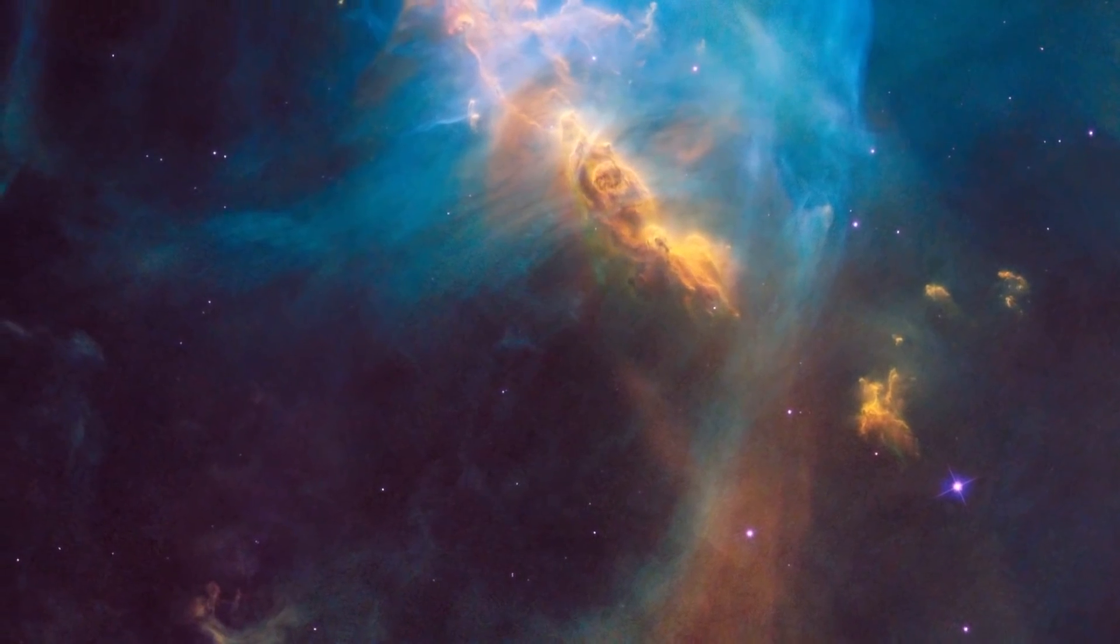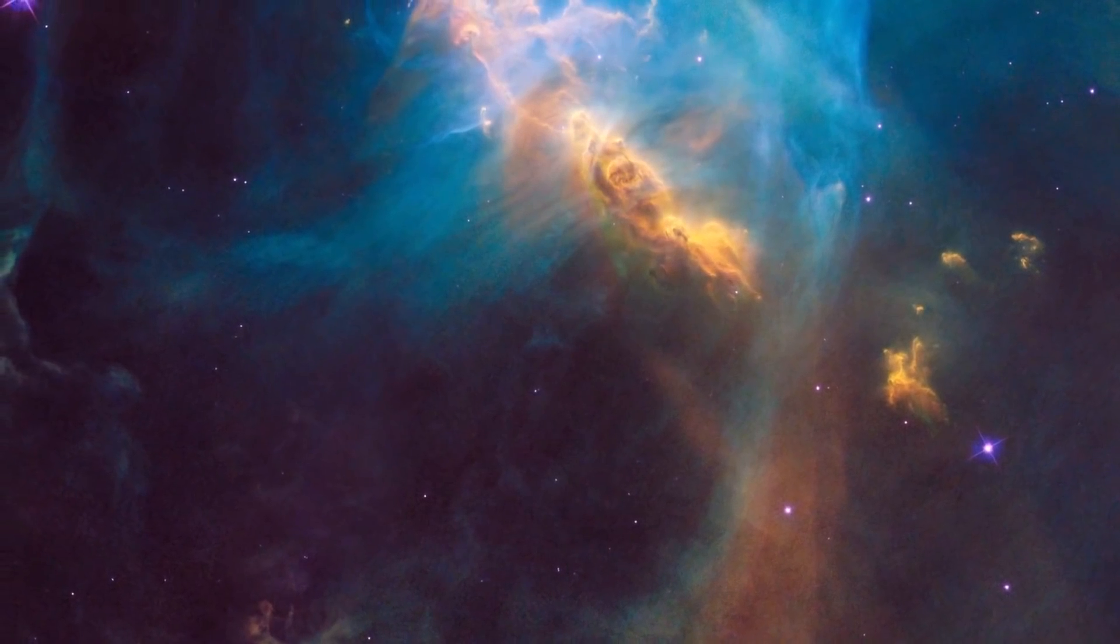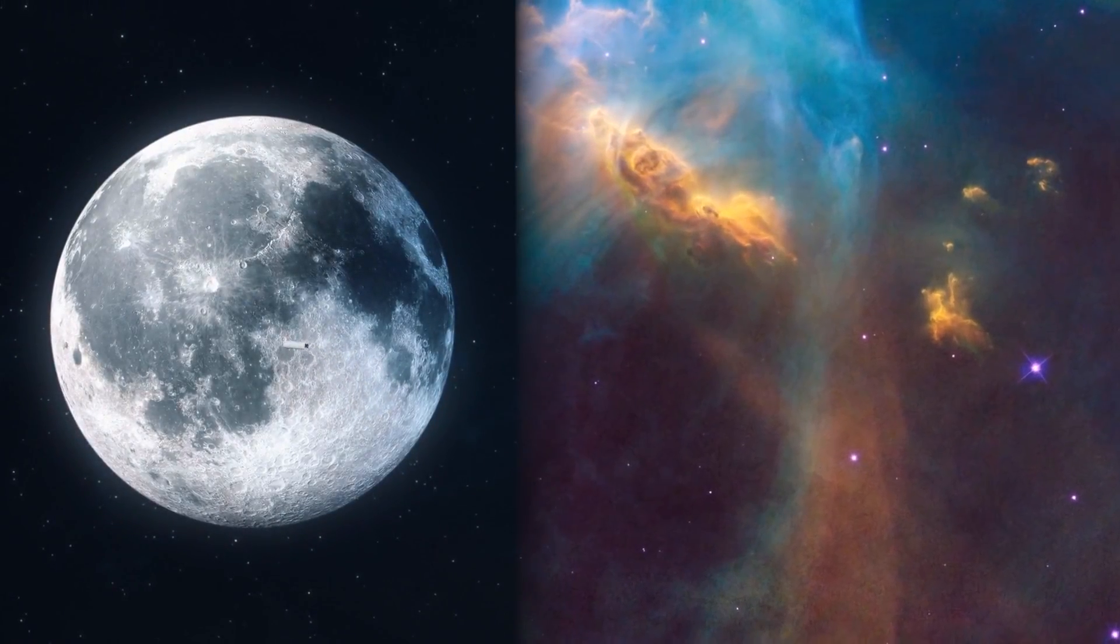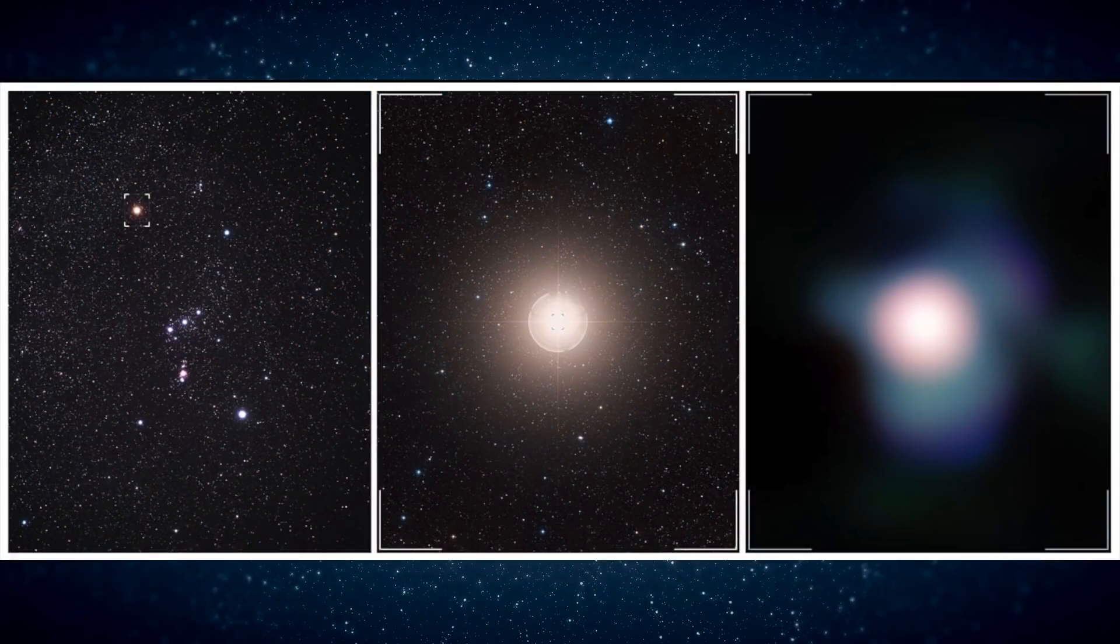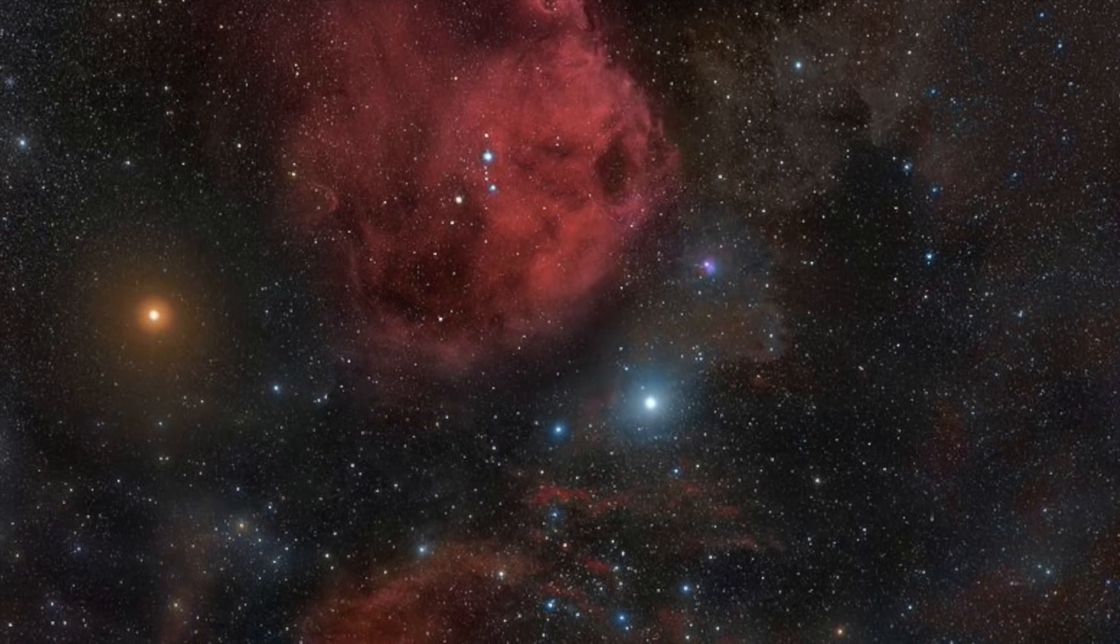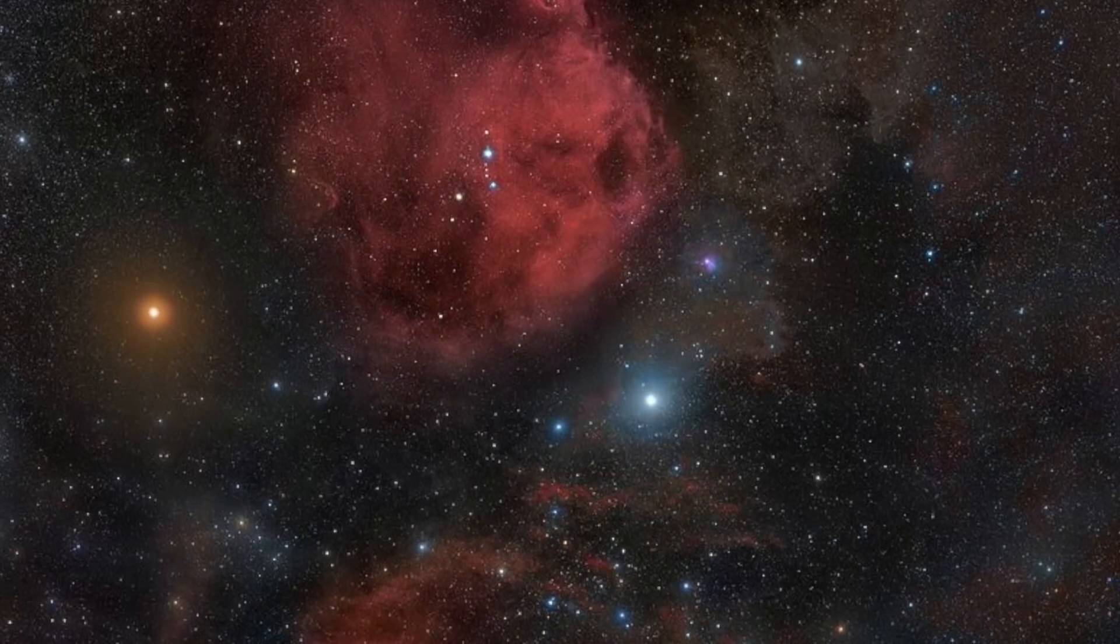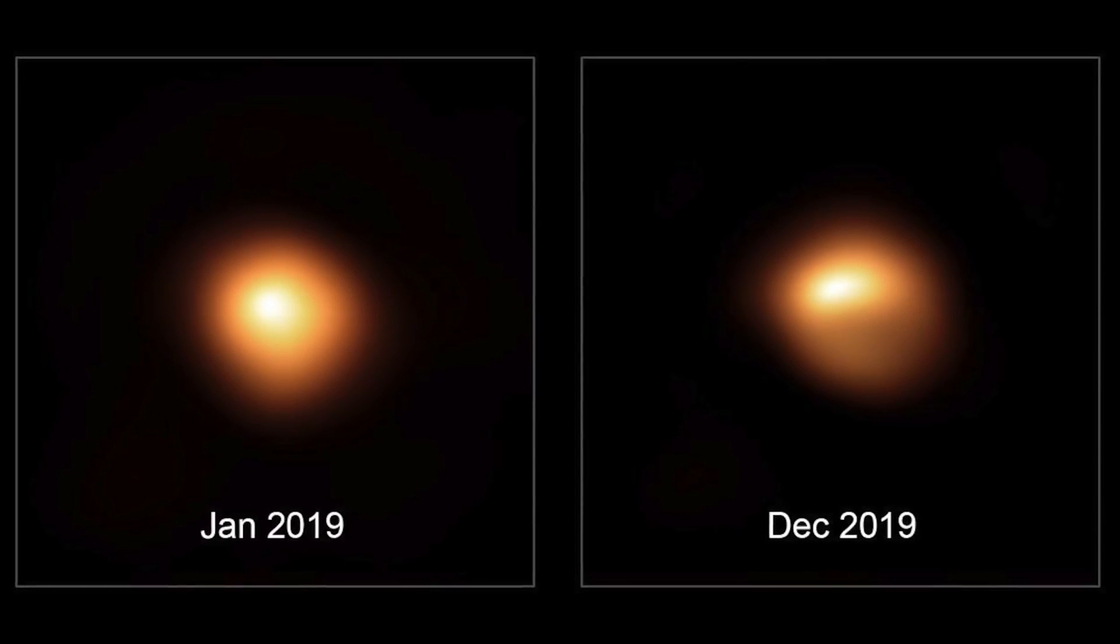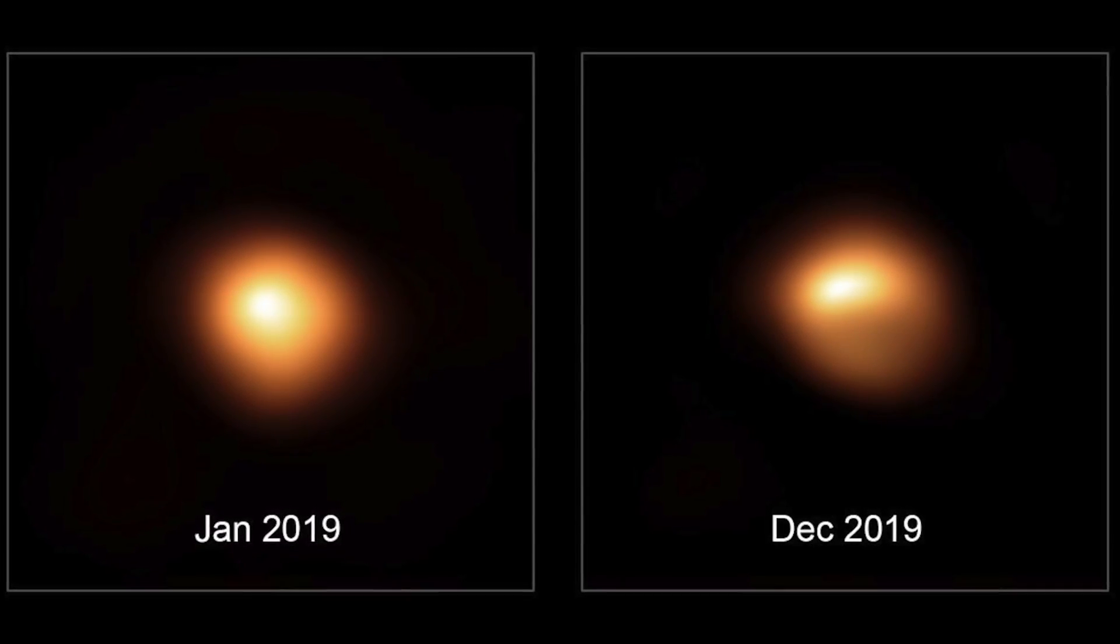Betelgeuse is now struggling to recover from this effect. The fractured chunk of the photosphere, which weighs several times more than our moon, was shot into space and cooled into a cloud of dust that blocked the starlight seen by observers on Earth. However, the dimming, which began in late 2019 and lasted a few months, was easily noticeable even to backyard observers watching the star change in brightness.